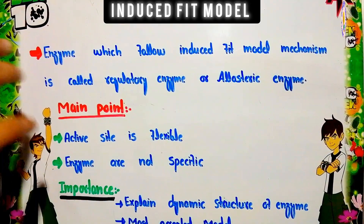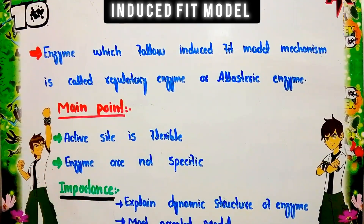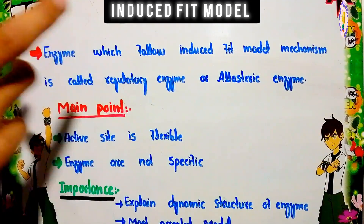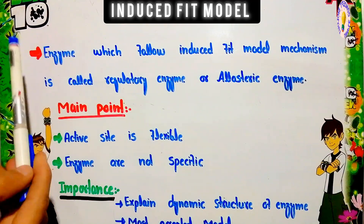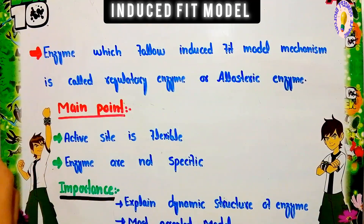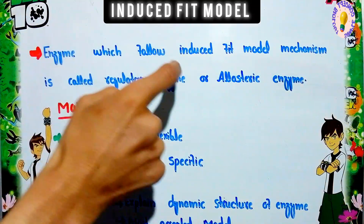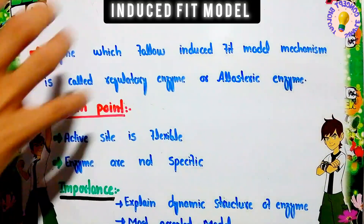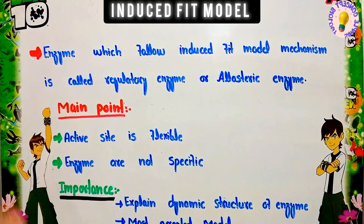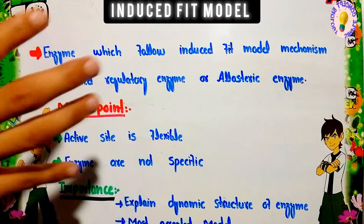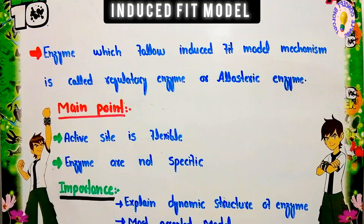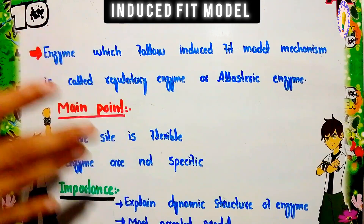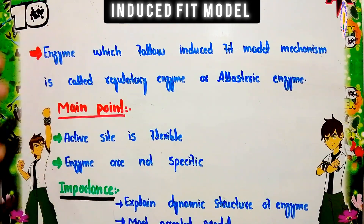The lock and key model is restricted to non-regulatory enzymes. Enzymes that follow the induced fit model mechanism are called regulatory enzymes. These regulatory enzymes are also known as allosteric enzymes. They are mainly responsible in metabolic pathways such as glycolysis, where they perform various types of activity.